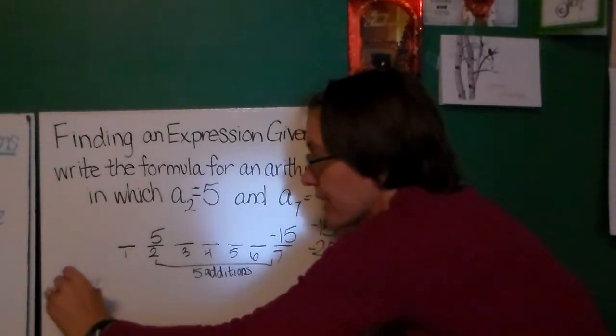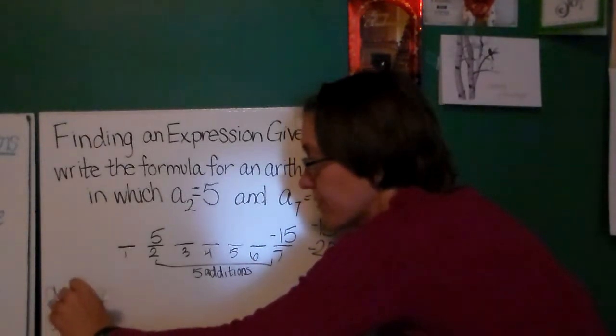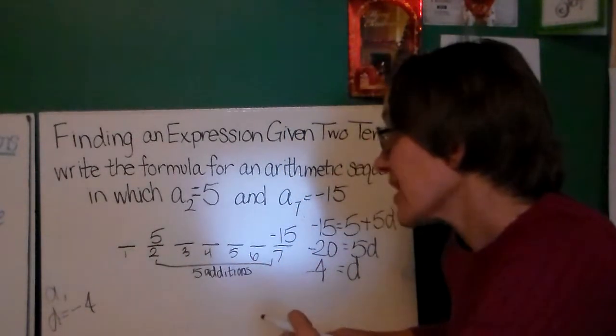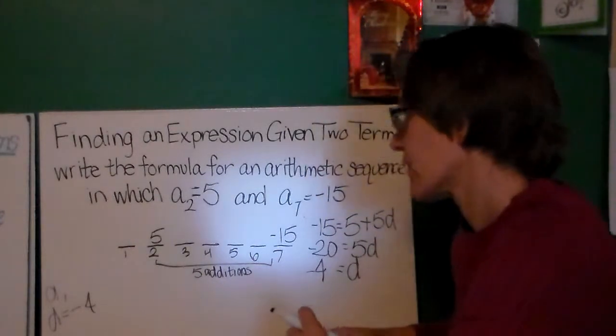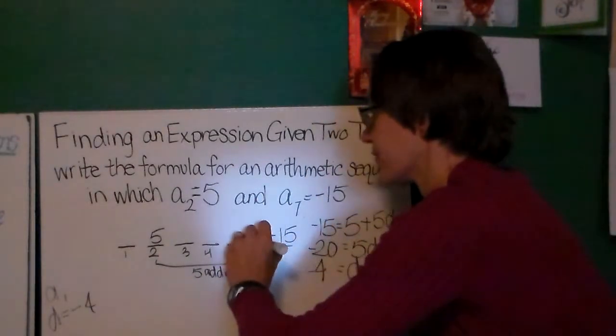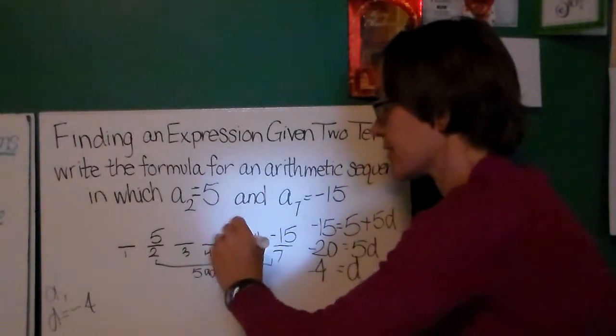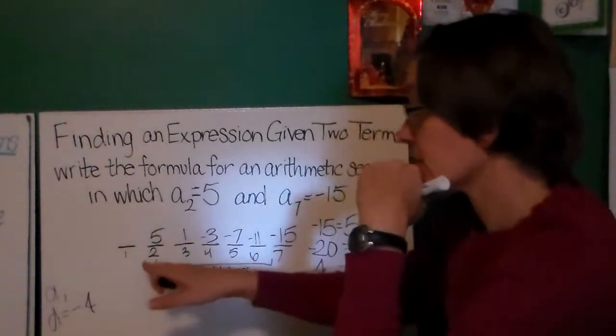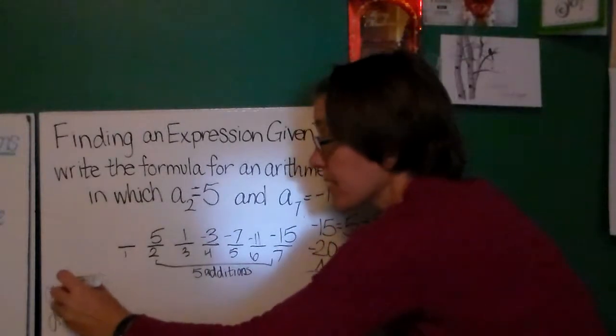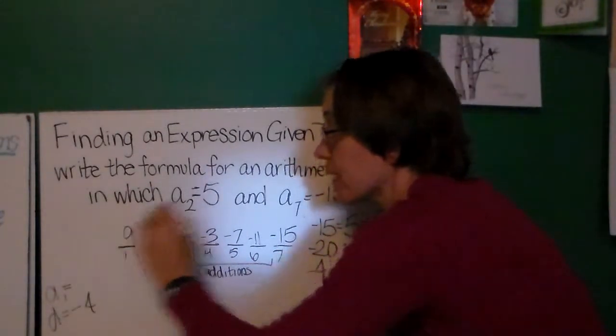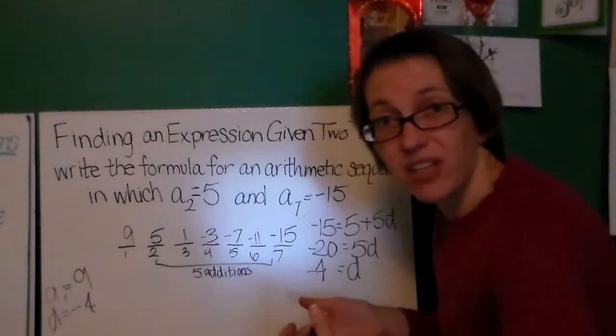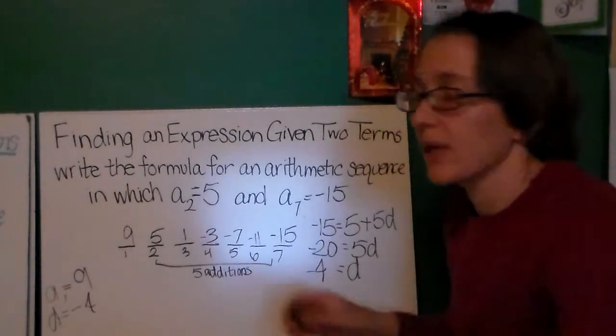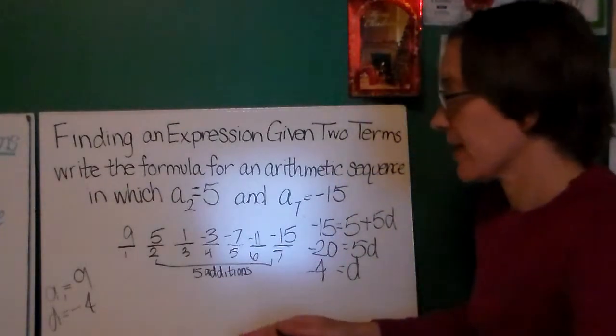So I don't know a1 right now, but I do know that my common difference is negative 4. Now if I know my common difference is negative 4, I can say this was negative 11, this was negative 7, this was negative 3, this was 1, 5. And backing up further, I can say my first term, a1, is 9. You don't have to fill all these in. You can find your answer doing more algebra, the same method I did here, but I like filling in tables. What can I say?